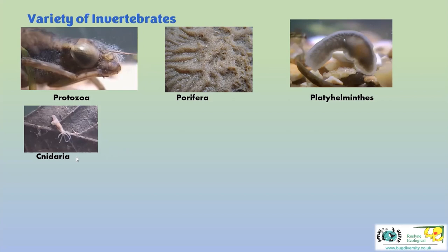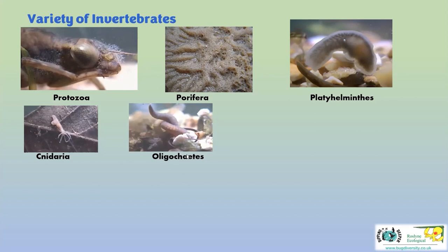Hydra, part of the Cnidaria - formerly Coelenterates - has a little ring of stinging tentacles. Essentially a jellyfish on a stalk: food is grabbed by the tentacles, stuffed into the mouth, digested, and anything that can't be digested is spat out. They're the first group with a hole at both ends. The Oligochaetes - the true worms, Annelid segmented worms - are earthworm-type animals. Some are as big as earthworms, others quite small and skinny.